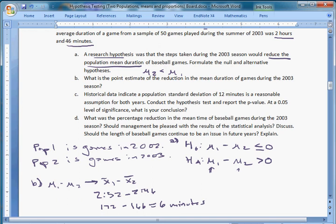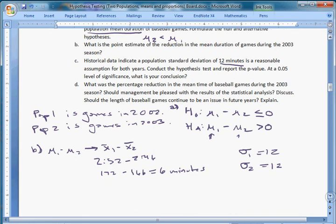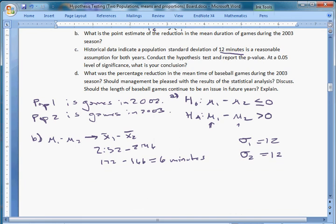Part C says historical data indicate a population standard deviation of 12 minutes is a reasonable assumption for both years. So σ₁ equals 12 and σ₂ equals 12. Conduct the hypothesis test and report the p-value at a 0.05 level of significance. What is your conclusion? Now, I'm going to slip back into my five-step approach, because questions vary greatly, but I know I'll get the right answers if I take my five-step approach.